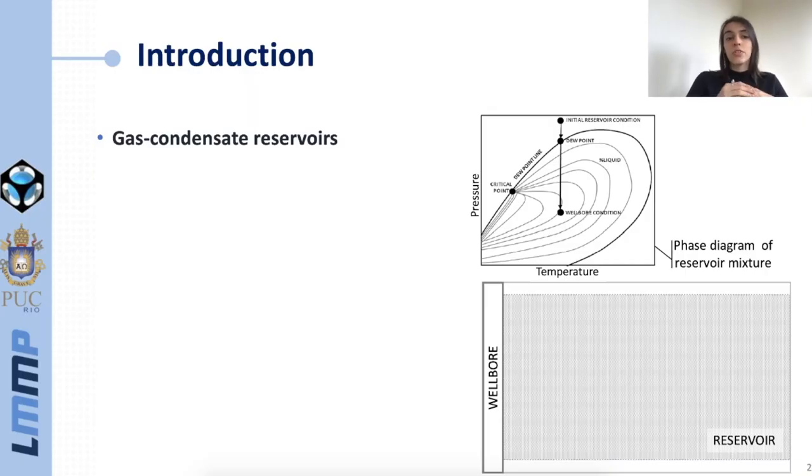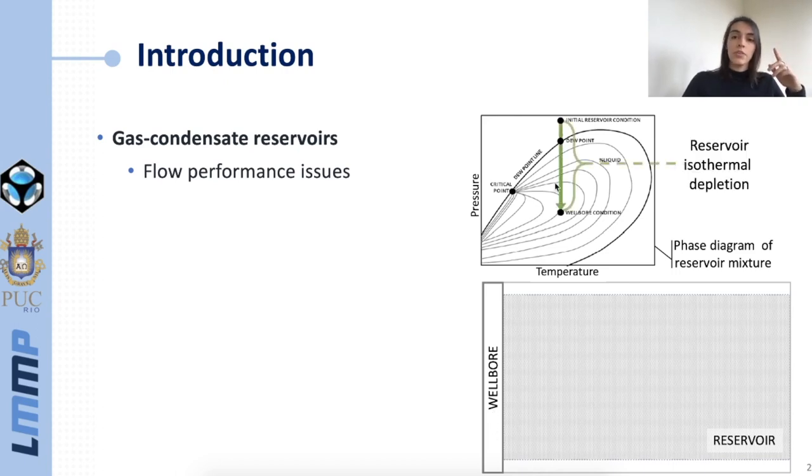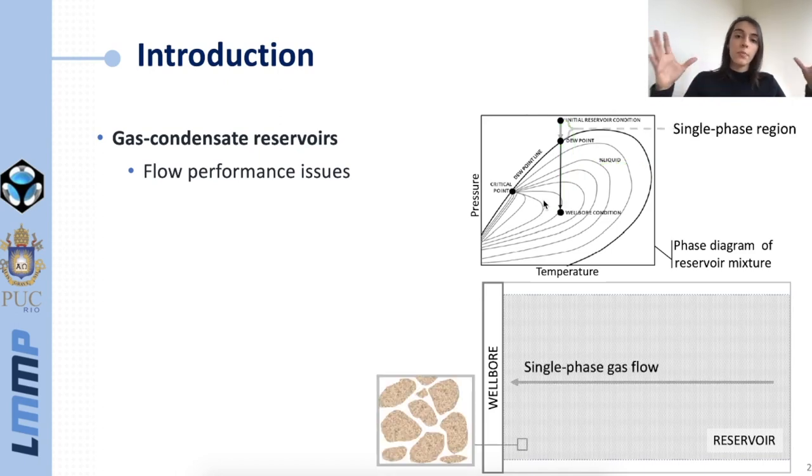Our work focuses on gas condensate reservoirs and more specifically on their flow performance issues, which I'll explain using this phase diagram and this reservoir wellbore scheme. If this spring arrow represents the reservoir isothermal depletion, when we have high pressures we are in the single phase region where there's only gas flowing from the reservoir to the wellbore.